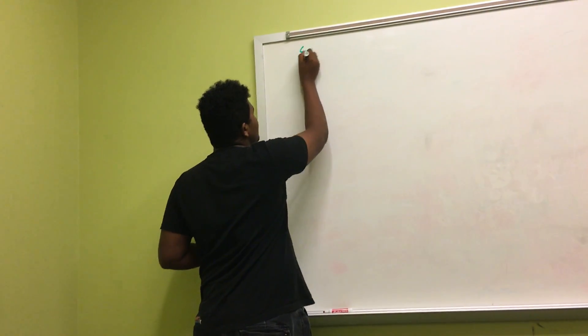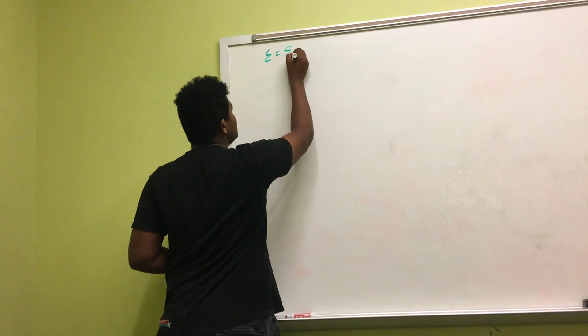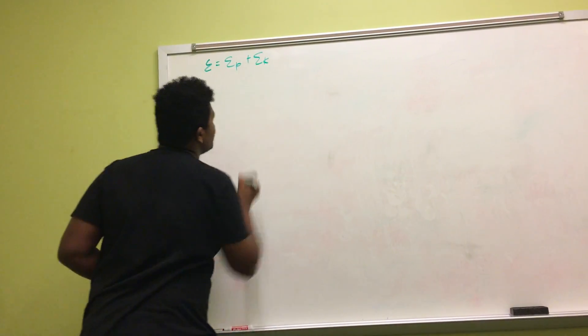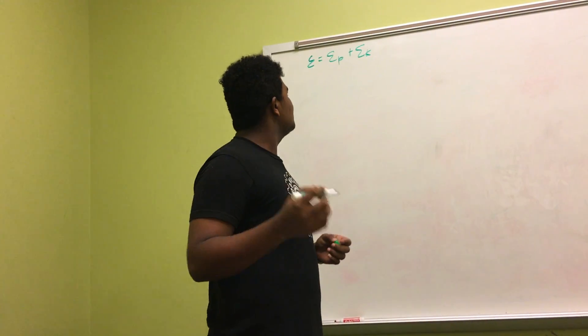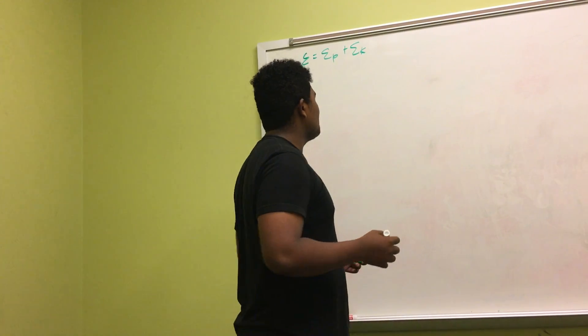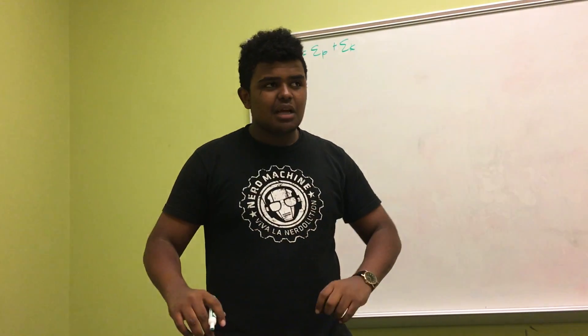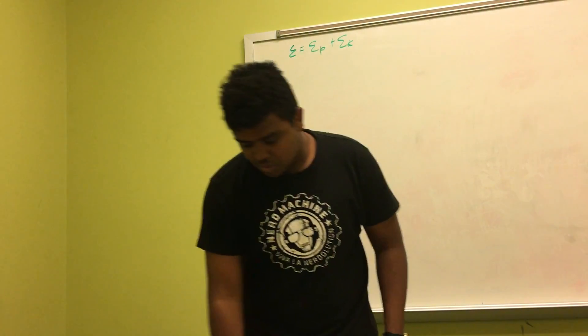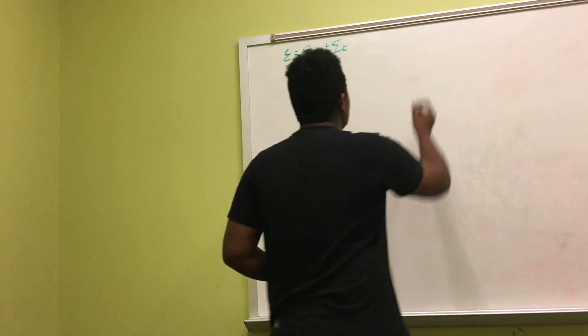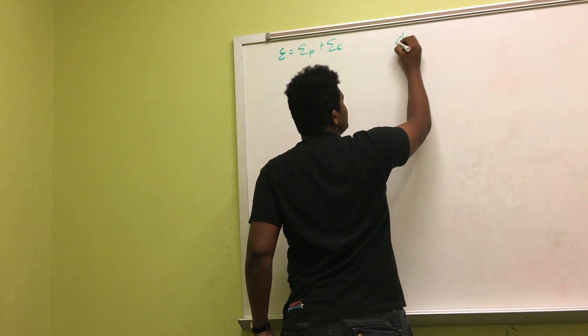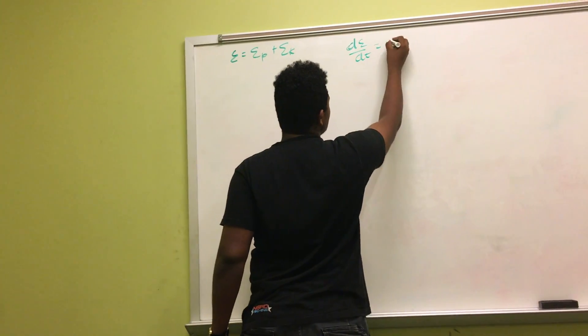Energy equals energy potential plus energy kinetic. We want to find the conservation of energy. Energy doesn't change over time. If you have a pendulum, energy transfers between forms — absolutely. Friction, by the way — energy is always the same, no matter the time. Therefore, our rate of change of energy with respect to time is zero.